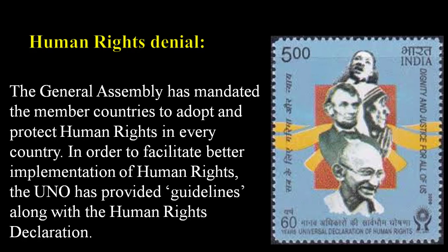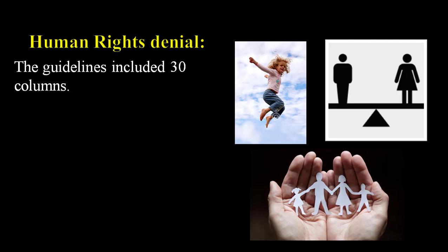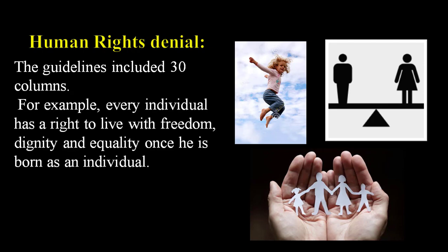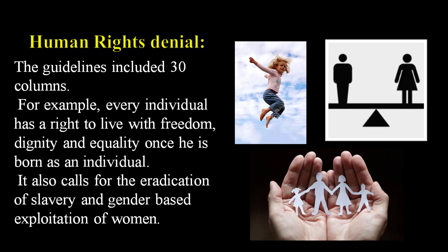To facilitate better implementation of human rights, the UNO provided guidelines along with the human rights declaration. The guidelines included 30 articles. For example, every individual has the right to live with freedom, dignity and equality once born. It also calls for the eradication of slavery and gender-based exploitation of women.